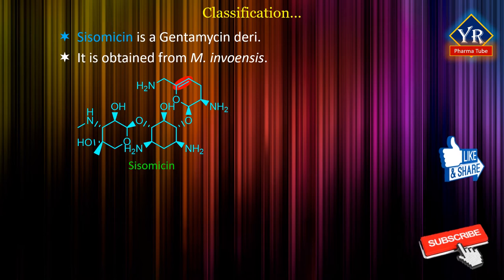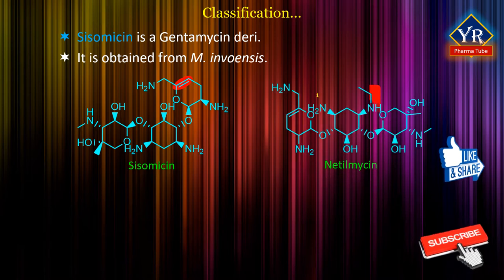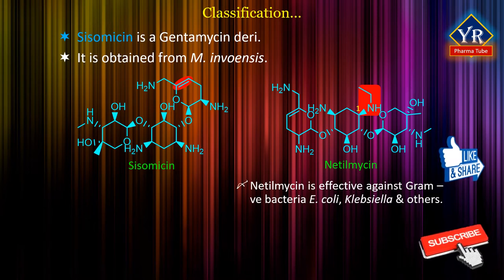Sisomycin may not offer any overall advantage, being inactivated by the same enzymes. The semisynthetic C1-N-ethyl sisomycin homolog, netilmycin, is resistant to these enzymes, thus being a drug effective against some gram-negative resistant E. coli, Klebsiella and others.